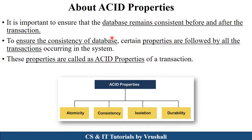Now the first point is: why exactly ACID properties? You can perform different operations and different transactions on the database. At that time, your database must remain consistent. Your database remains accurate before and after the transaction. That's why there are ACID properties — they ensure the consistency of the database before and after the transaction. So all transactions must follow these properties.